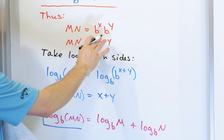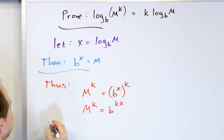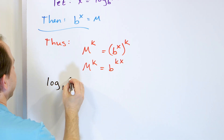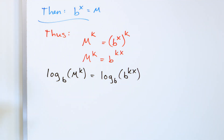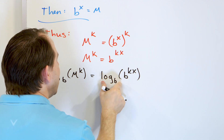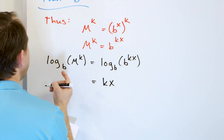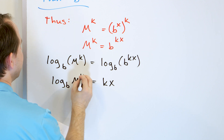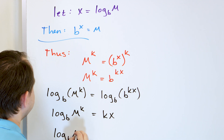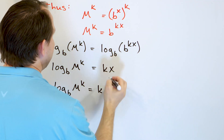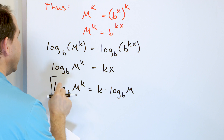Once we have it written out, just like before, we take the log of both sides. We take log base b of m to the power of k equals log base b of b to the power of kx. On the right-hand side, you get the same annihilation — the log and the exponential cancel — leaving just kx. On the left you have log base b of m to the power of k equals k times x. But x is log base b of m, so you have k times log base b of m.